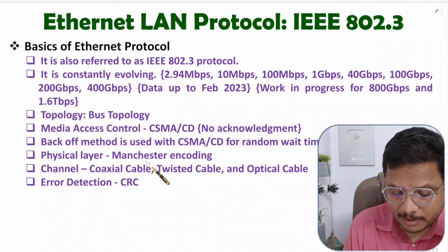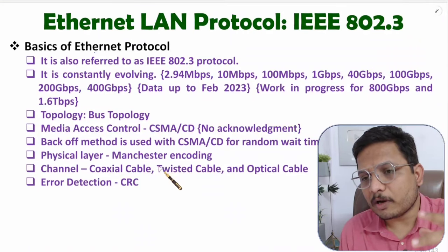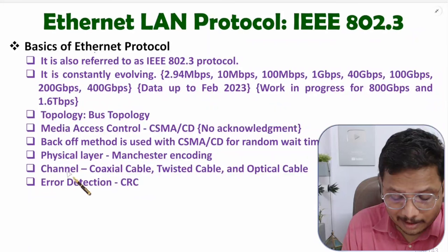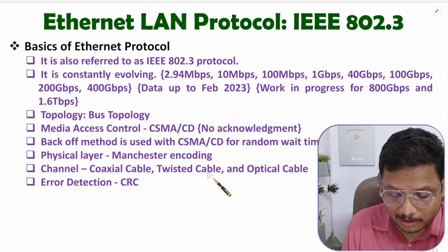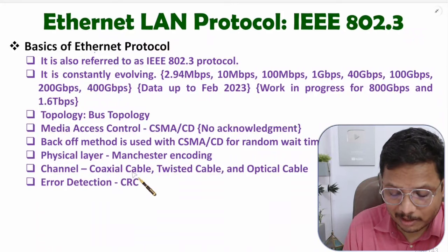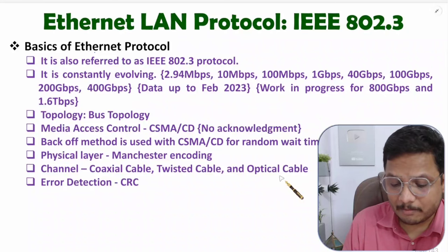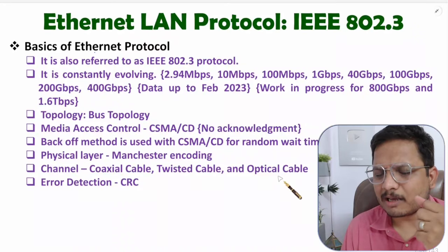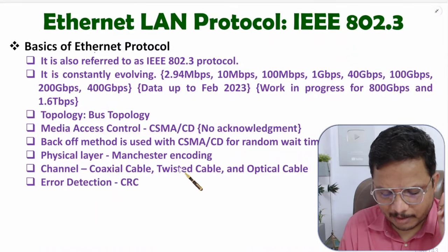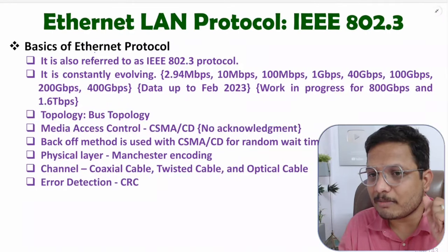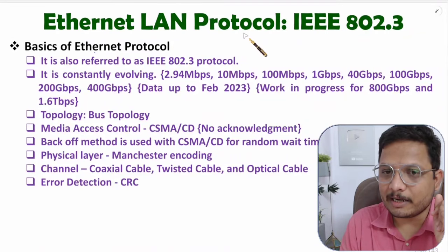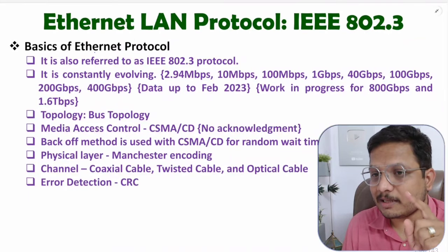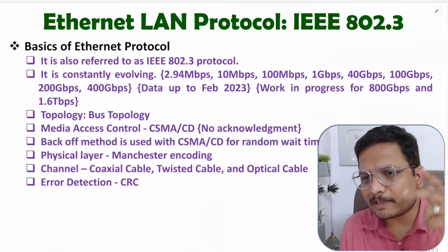At the physical layer, Manchester encoding is used — I have made a separate video on that. The channel was initially deployed on twisted pair cable, then gradually updated to coaxial cable, and right now optical cable is also available. The 400 Gbps bandwidth is possible only with optical cable; twisted pair or coaxial cable cannot support that huge bandwidth. Error detection in this protocol is done by CRC, and I have a separate video on that as well.